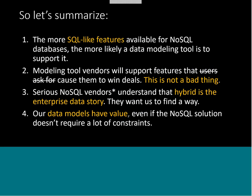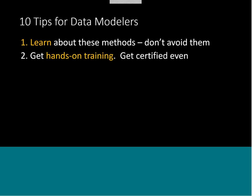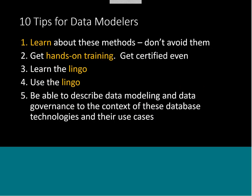Data modeling tool vendors will support features because they win deals — this is how business works, this is not a bad thing. If they know you're using SQL Server 2017 and you want to be designing graph nodes, you're going to need your tool to do that. The serious NoSQL vendors, since a lot of them are open source, understand that hybrid is the enterprise data story. The big ones understand that enterprise data is important and that we have a lot of processes focused on relational, but we need non-relational things too. They understand that our data models still have value even though they're expressed in a relational way. So I want you to learn about these methods. Don't avoid them. Go get hands-on training with these physical database things.